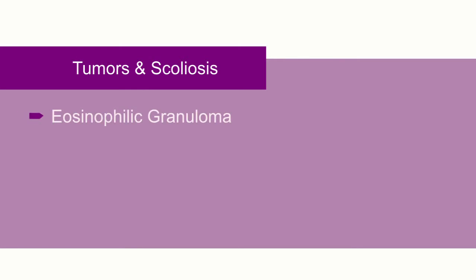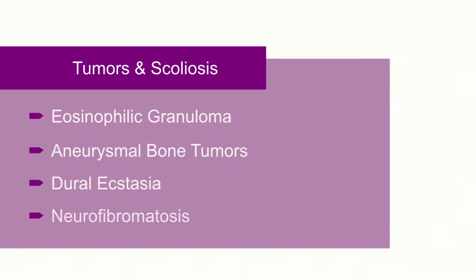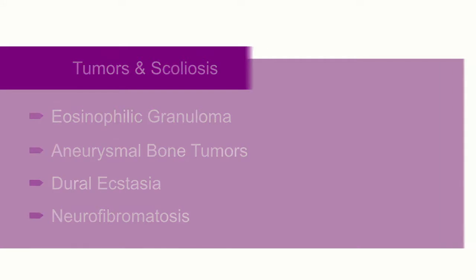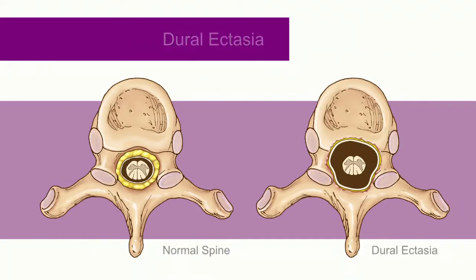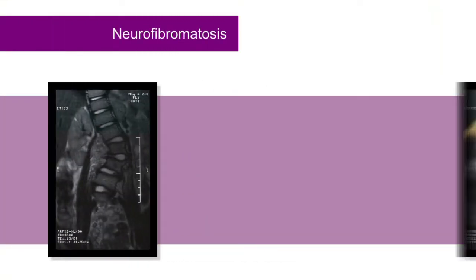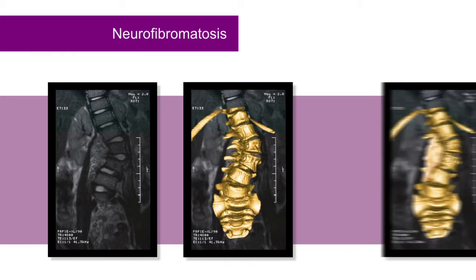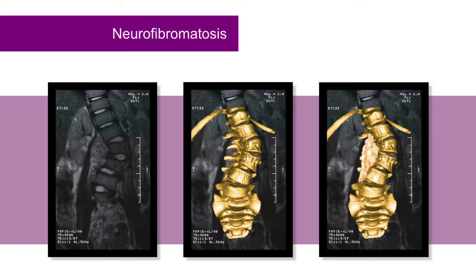Tumors may lead to the formation of a spinal deformity through destruction of the bone or abnormal growth. Eosinophilic granuloma and aneurysmal bone tumors weaken the spine, which then leads to collapse and spine deformity. Dural ectasia is an abnormal enlargement of the spinal cord that leads to abnormal growth and deformity. Neurofibromatosis is a genetic disorder that leads to abnormal enlargement of the nerves of the spine, and the mass of nerves may become so large that it deforms the spine and produces scoliosis.